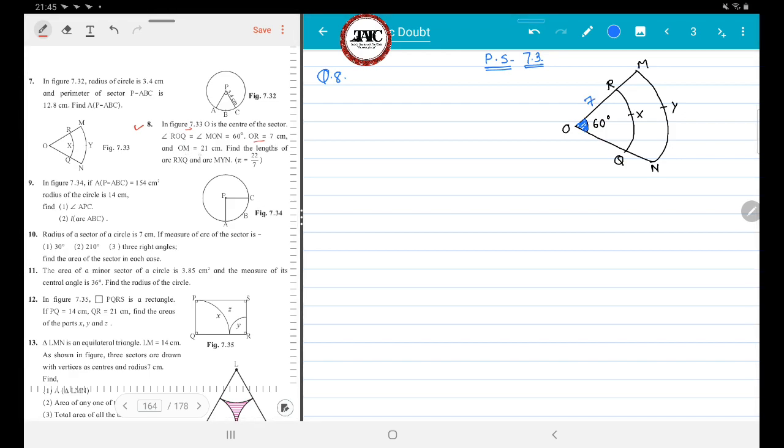And OM, meaning from O to M, is 21. So you are supposed to find out the length of arc RXQ and MYN.